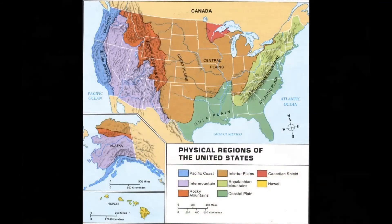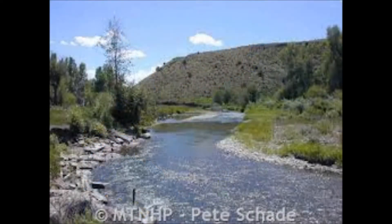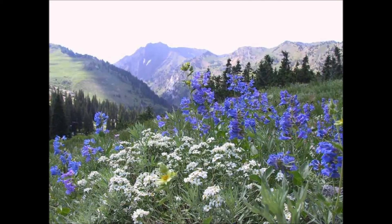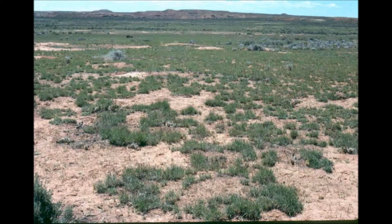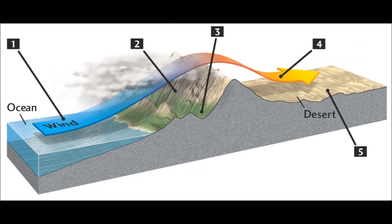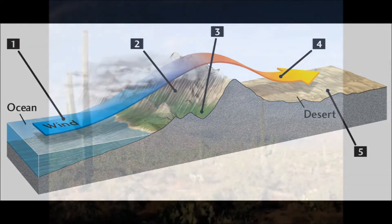In purple, we have the intermountain region, which is located between the Rocky Mountains to the east and the Pacific Coastal Ranges to the west. The topography of this region is comprised of basins, ranges, and plateaus. The precipitation and climate vary in this region as the rain shadow effect blocks much of the region's rainfall from Pacific storms, creating arid deserts in the southern portion.